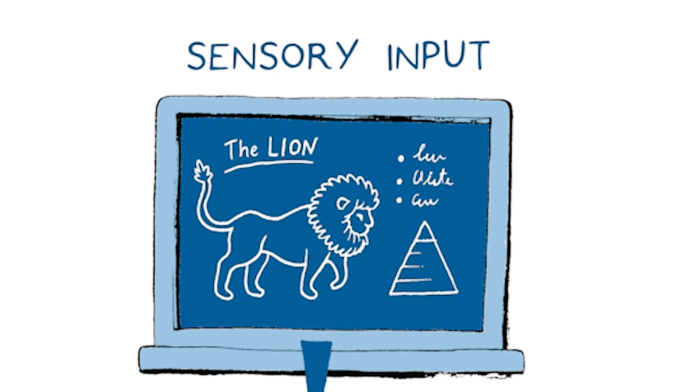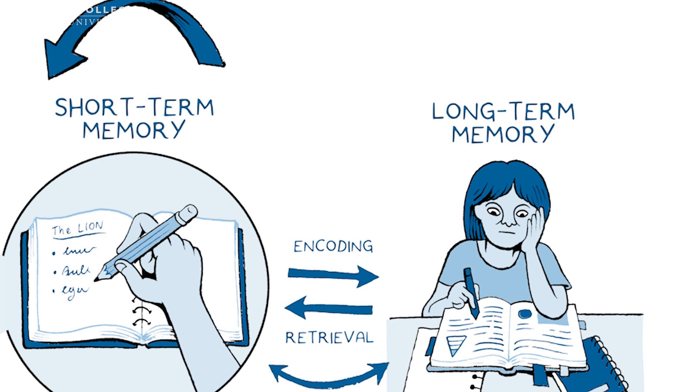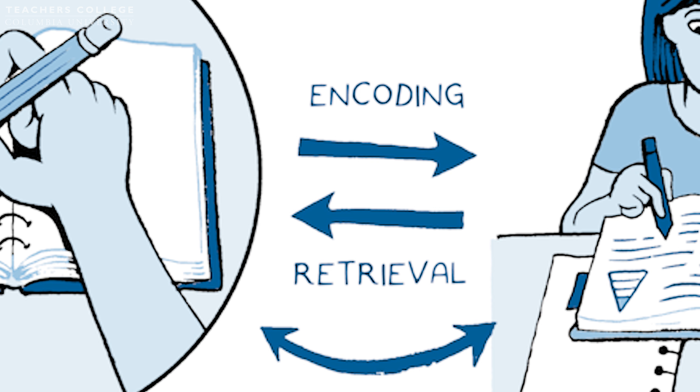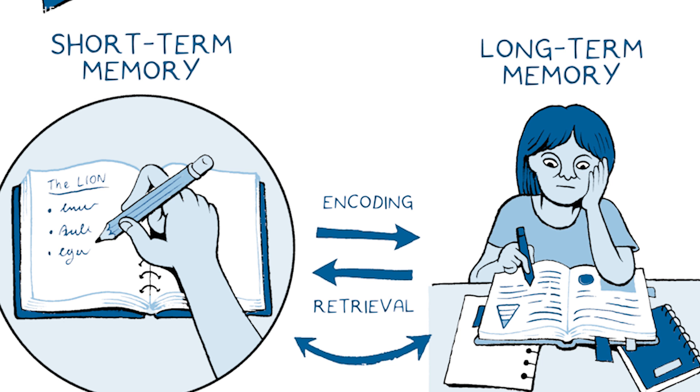Let's begin by reviewing what we learned about how memories are made in our last session. Our memory model illustration will help us visualize this. Recall that learning is mostly about transferring information that enters short-term memory into long-term memory, where it is stored for later use. It's the dialogue between these two that causes memories to be formed. We are only conscious of the information currently being held in our short-term memory, and we are largely oblivious to the enormous amounts of information stored in long-term memory.